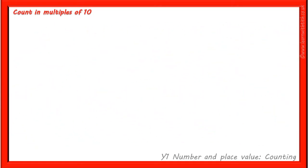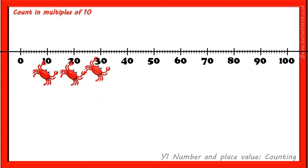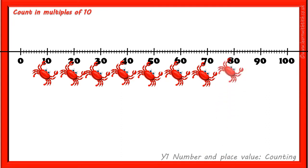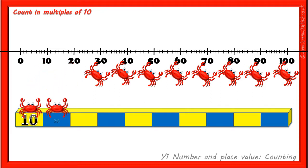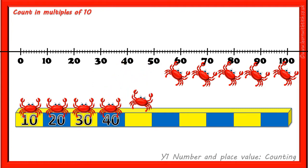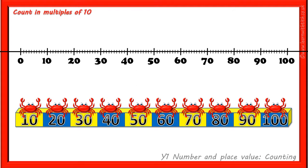We can also represent this on a number line where we can start counting at 0. We can also represent each answer on a counting stick, which helps when we start to learn our times tables, like this: 10, 20, 30, 40, 50, 60, 70, 80, 90, 100. And where 0 has no space as it represents 0 groups of 10.